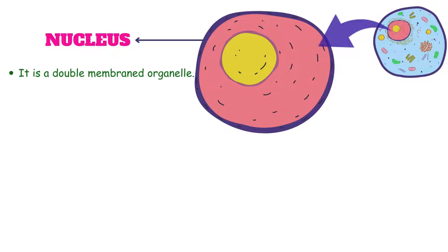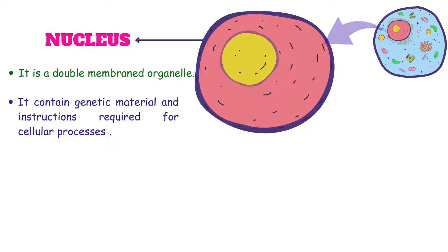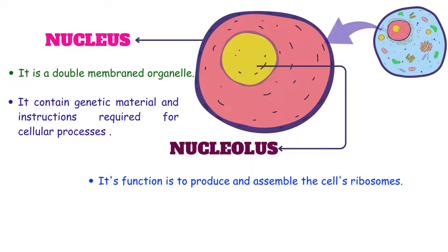Nucleus is a double membrane organelle. It contains the genetic material and the instructions required for cellular processes. Inside the nucleus, nucleolus is present. The function of nucleolus is to produce and to assemble the cell's ribosomes.